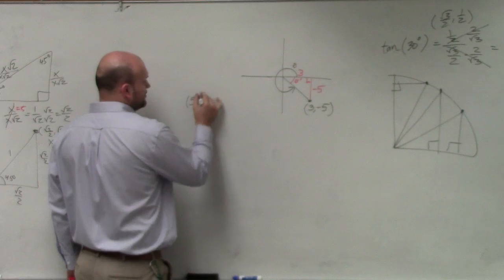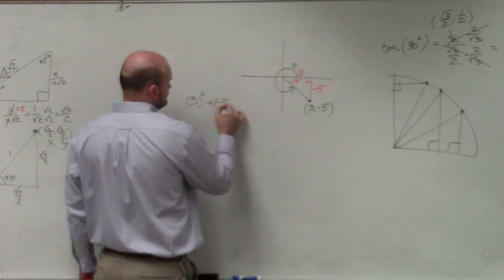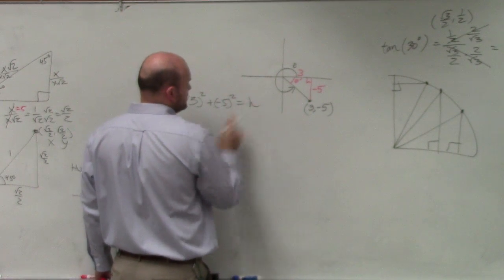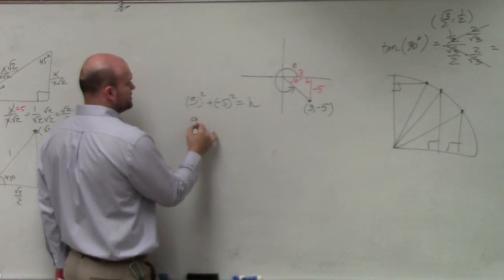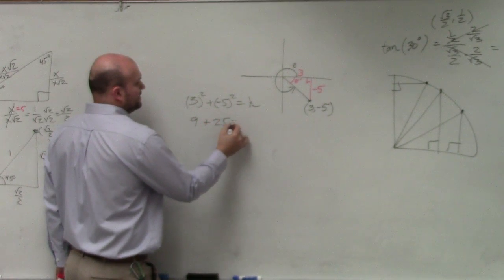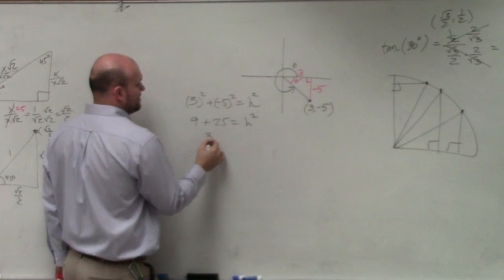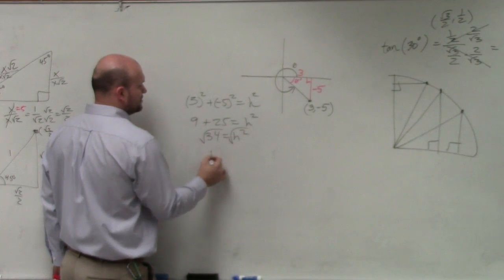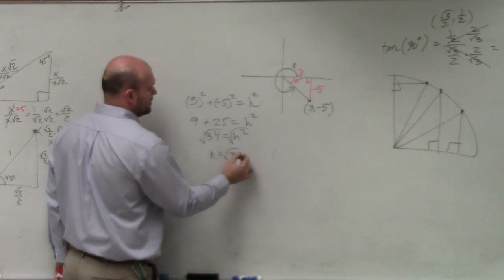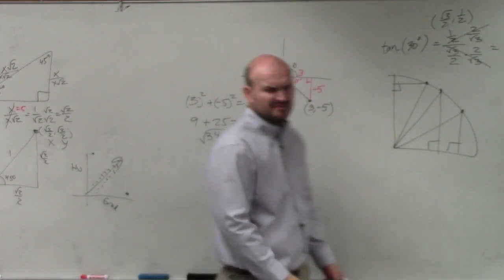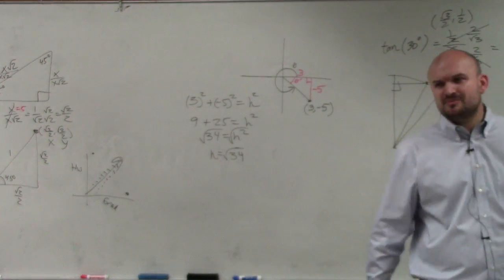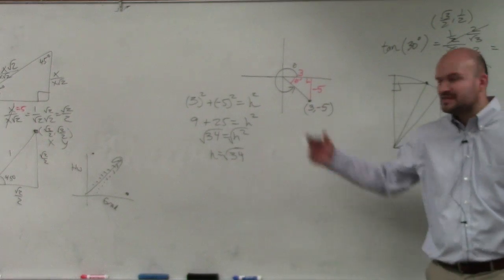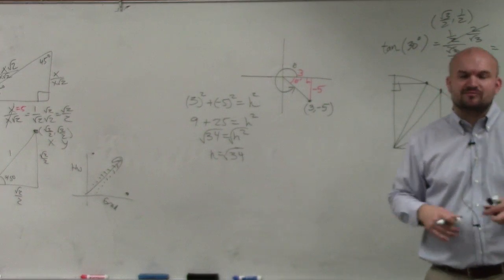So I'll quickly do Pythagorean theorem. I'll just call that h. So I have 9 plus 25 equals h squared. That becomes 34 equals h squared. Square root, square root, h equals the square root of 34. Double check. Can I simplify my radical at all? Is there any numbers that can divide into that? No, that's a prime number. Cannot be simplified.